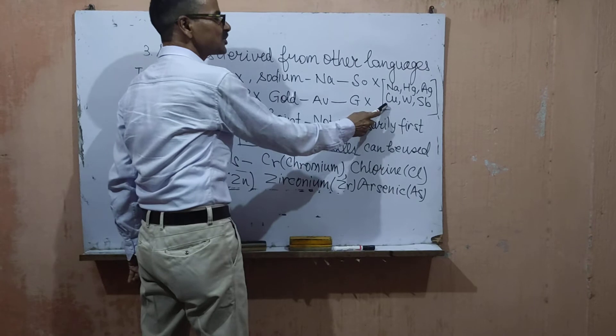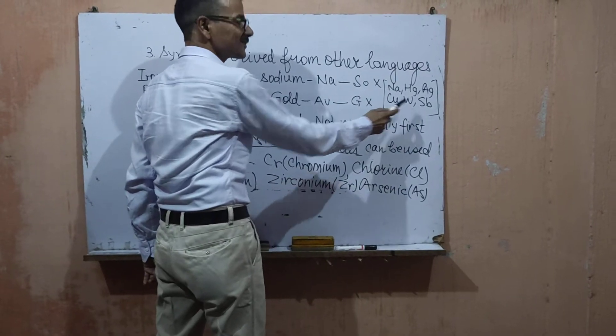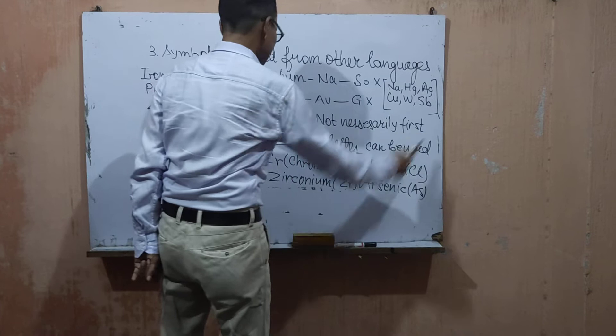Ag for silver, Cu for copper, W for tungsten which is taken from German name, Sb for antimony.